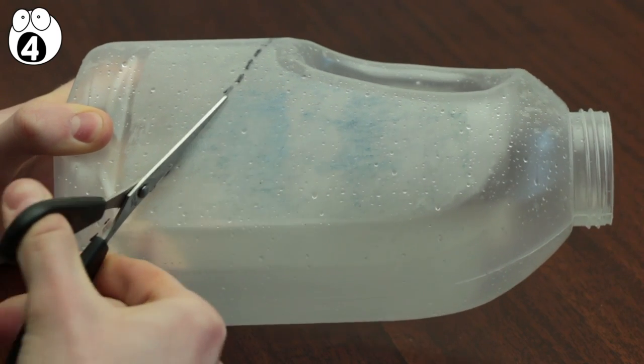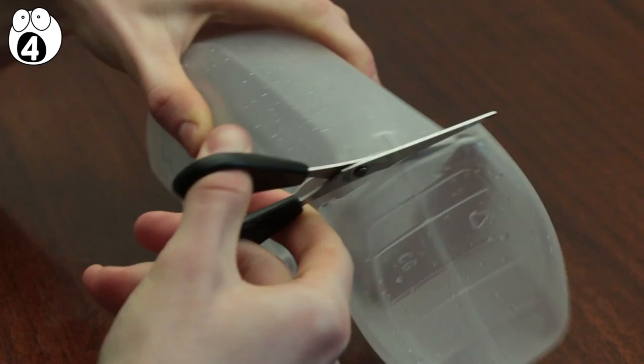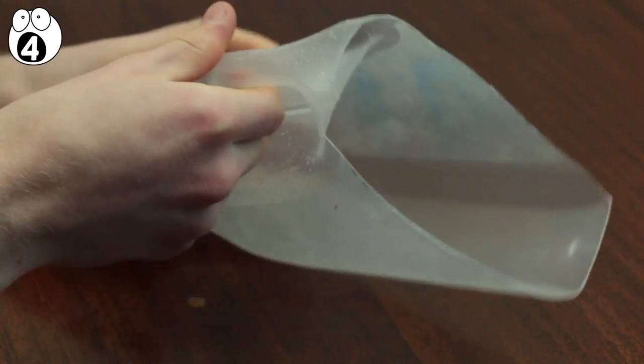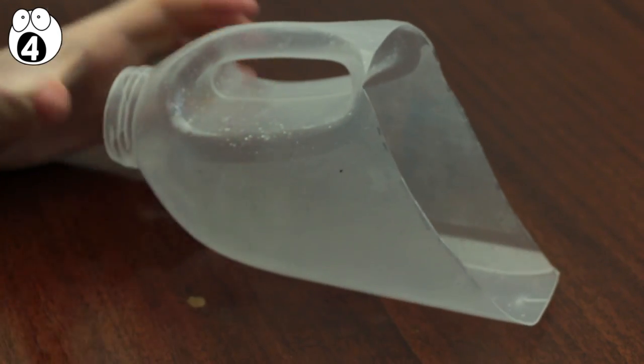If you don't care about how it looks, just cut off the end at a slant like this. In a matter of minutes, you have yourself a functional ergonomic scoop.